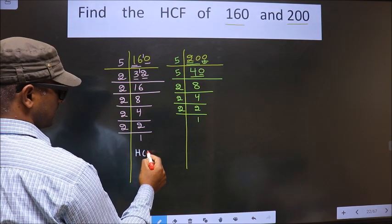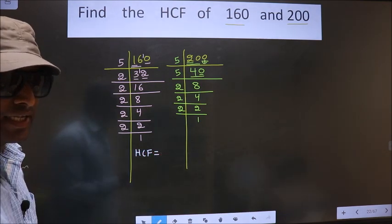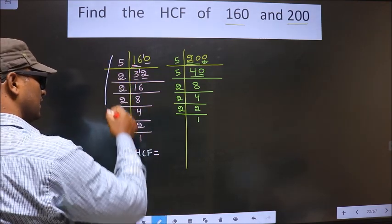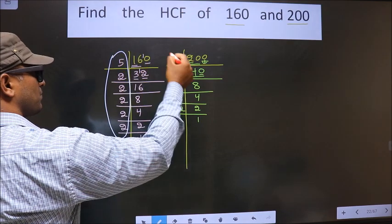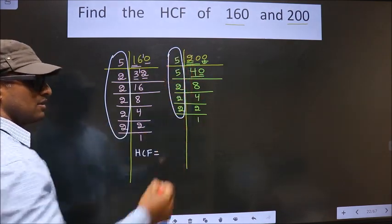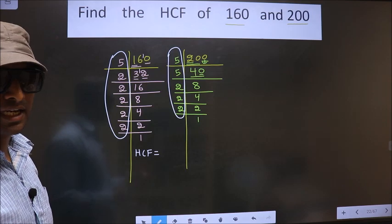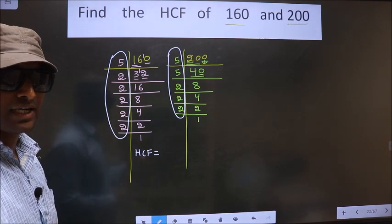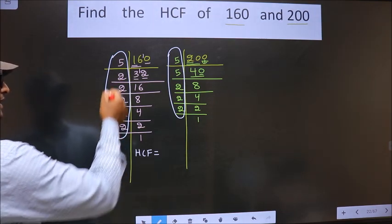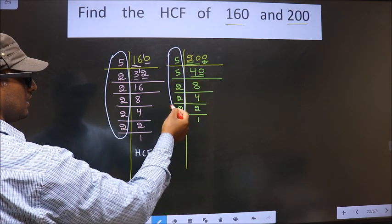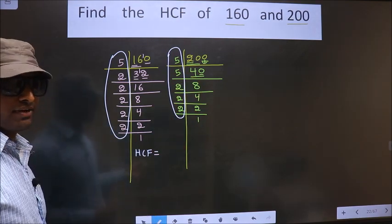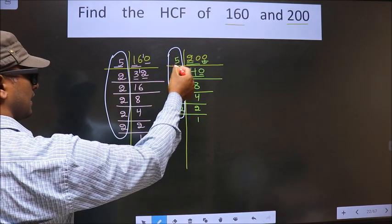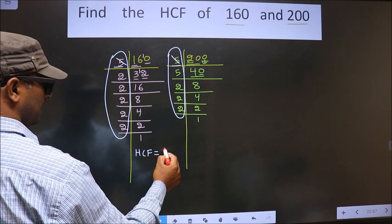So now our HCF is the product of numbers that are present in both factorizations. We should find the numbers that are present in these 2 places. Starting with the number 5 — do we have 5 here? Yes. So cut 5 and write it here.